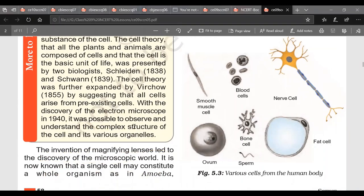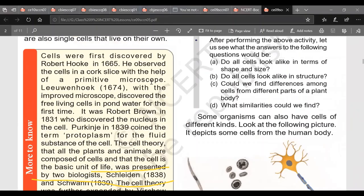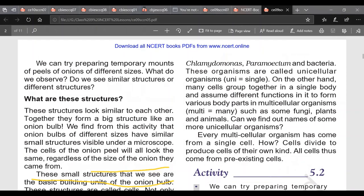Then it says invention of magnifying lenses led to discovery of microscopic world. It is now known as a single cell. Now here you can give heading to this paragraph: unicellular versus multicellular organism. A single cell may constitute entire whole organism as in case of amoeba, amoeba and paramecium, paramecium, Chlamydomonas. So we have got examples of unicellular organisms: amoeba, paramecium, bacteria, Chlamydomonas. These are called unicellular organisms.